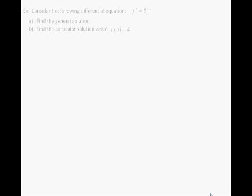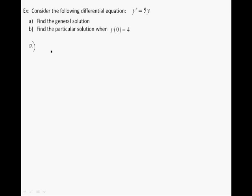Let's now consider the following example. We have the differential equation y prime is equal to 5y. In part A we're asked to find the general solution, and in part B the particular solution when y of 0 is equal to 4. We begin by rewriting the differential equation with differentials, so y prime becomes dy over dx. Now we use separation of variables and bring the y's to the left and the x's to the right.